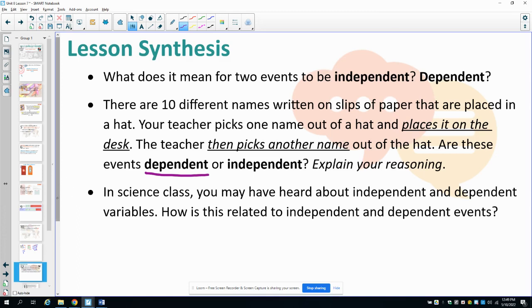You may also remember hearing in science class about independent and dependent variables. So how are these related to independent and dependent events? So a dependent variable is something that is impacted by the independent variable. So for instance, if we have boiling water,